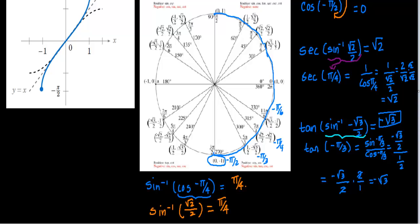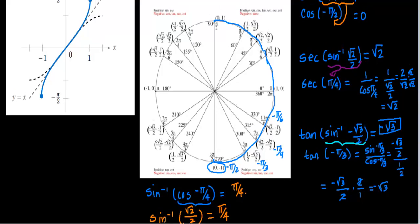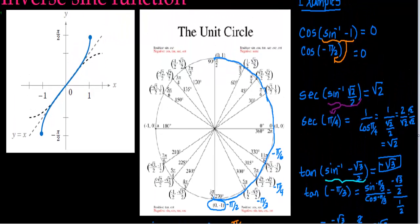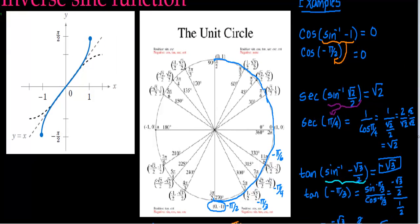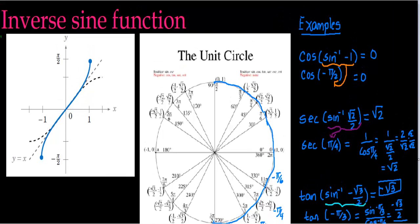And there you have your examples. It's a little tricky when using inverse sine — you have to pay attention to the range. In later examples with cosine and tangent, they have similar but different restrictions. Our next video is going to be on the tangent function. See you then.